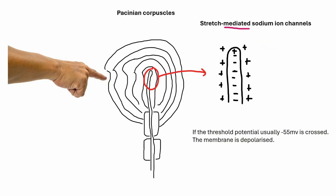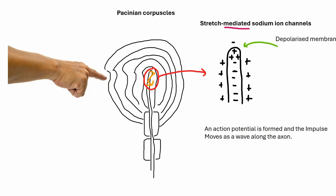If the generator potential is big enough and crosses the threshold potential, normally minus 55 millivolts, then the axon will be depolarized. An action potential or wave of depolarization will move down the axon.